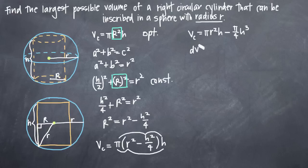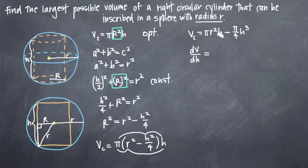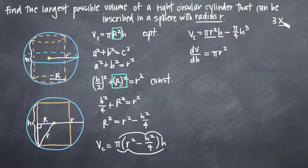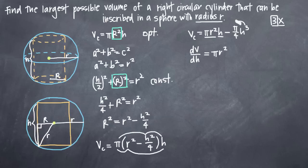The derivative dV/dh: taking the derivative of pi r squared h with respect to h — since r squared is a constant, this is just pi r squared. For the second term, we apply the power rule, bringing the 3 out front and subtracting 1 from the exponent, giving minus 3 pi over 4 times h squared. So dV/dh equals pi r squared minus 3 pi over 4 times h squared.